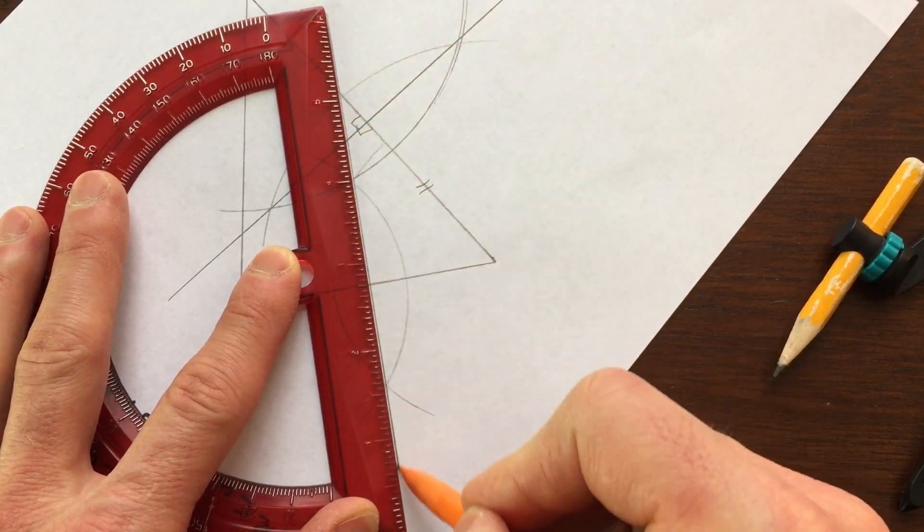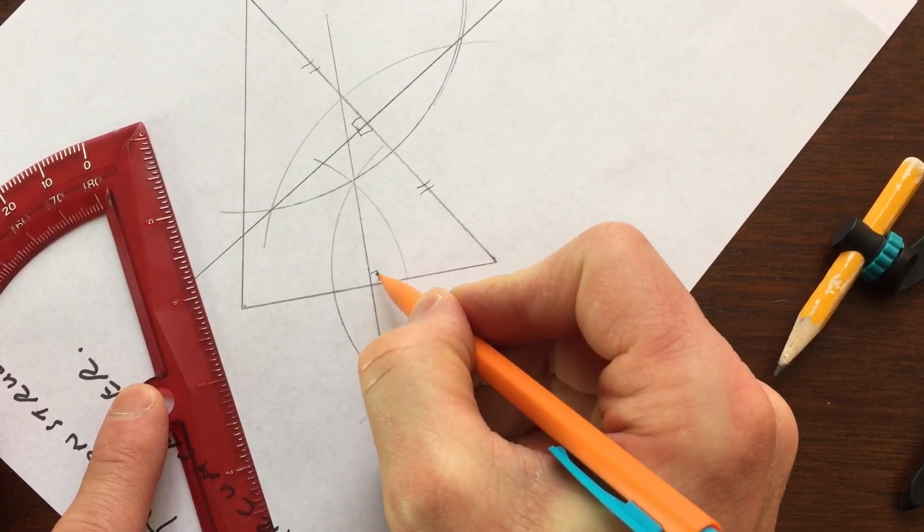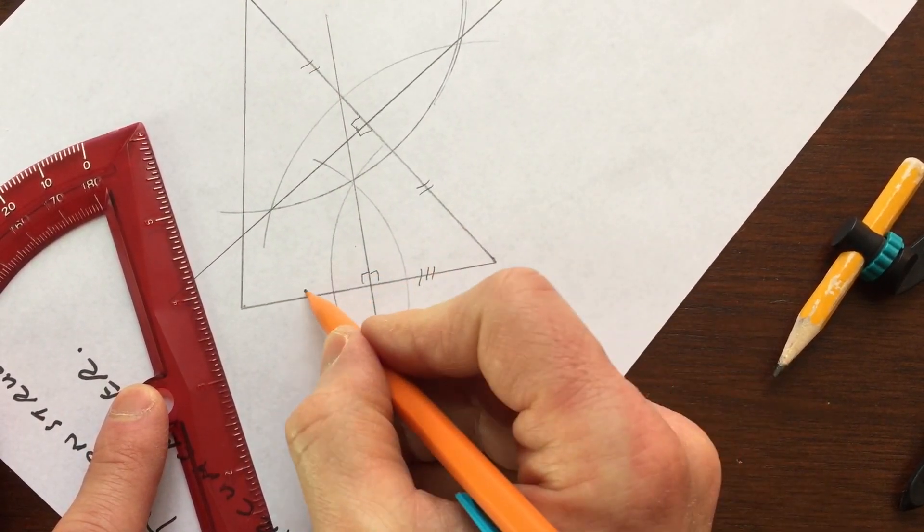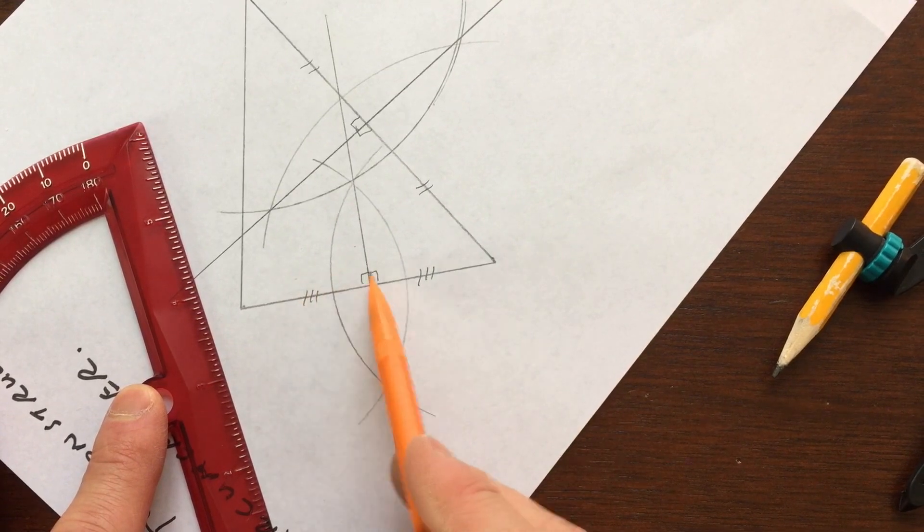So if I draw that in there, I'm trying to be accurate here. So that's perpendicular, and you can see that it's bisecting the side. So this length is the same as this length.